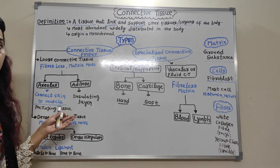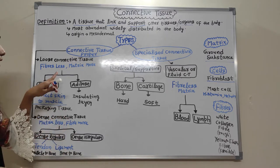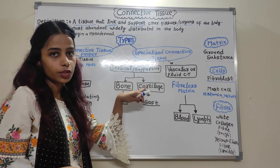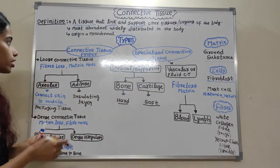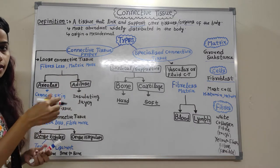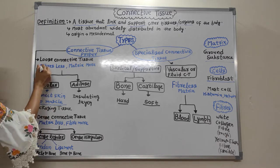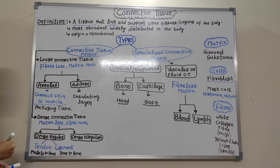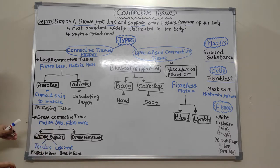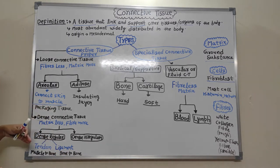If we divide Connective Tissue, it is basically of two types: Connective Tissue Proper and Specialized Connective Tissue. Connective Tissue Proper is further divided into Loose Connective Tissue and Dense Connective Tissue.